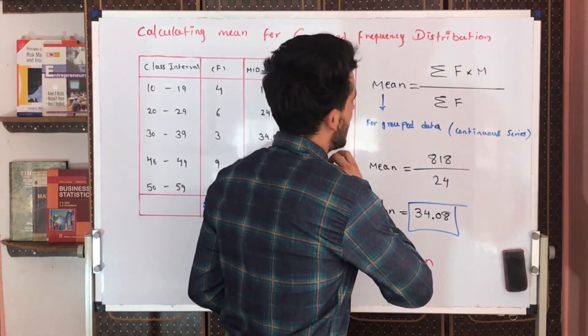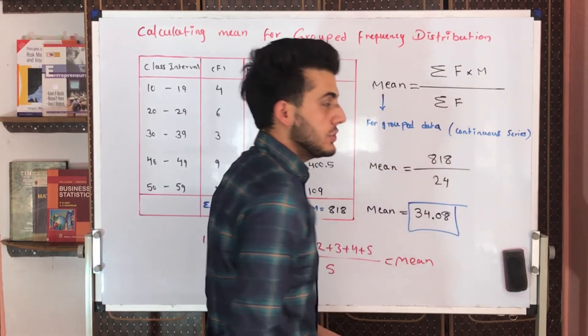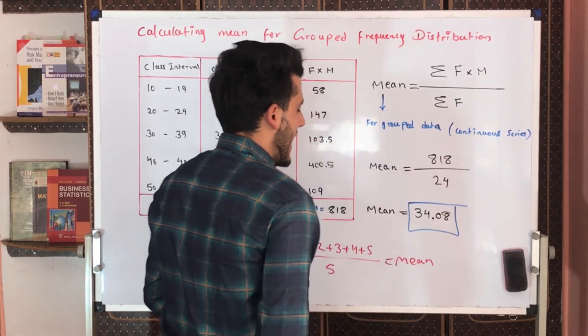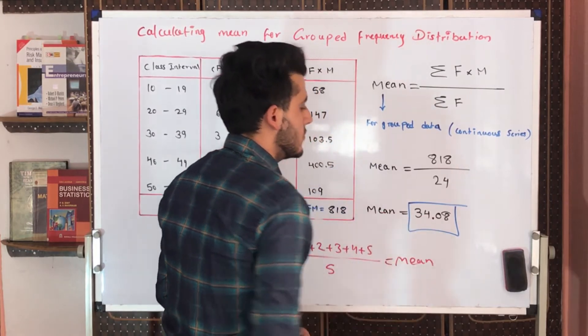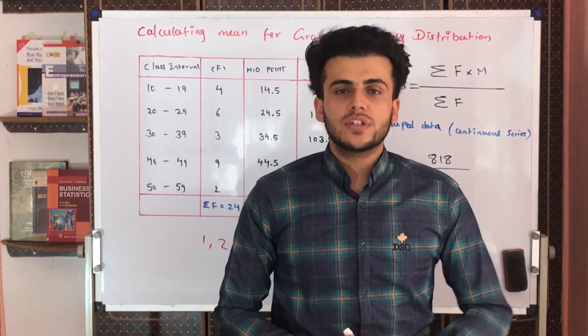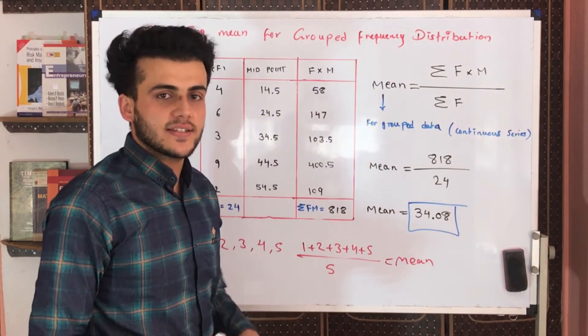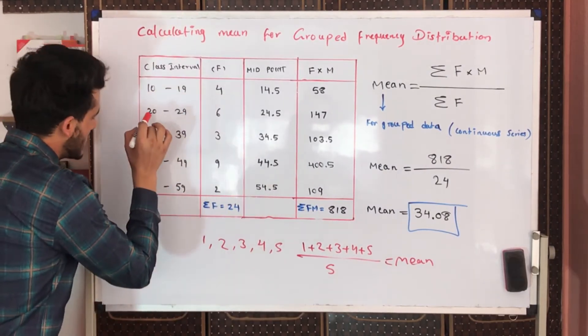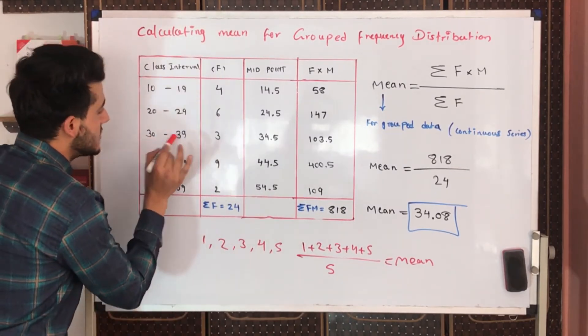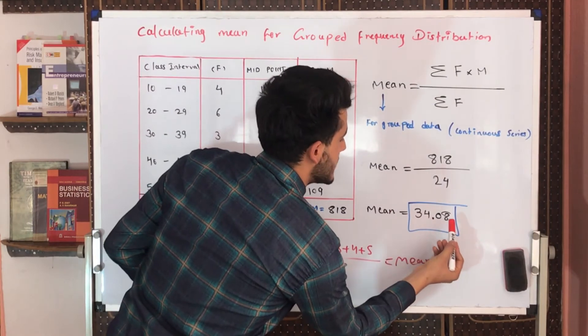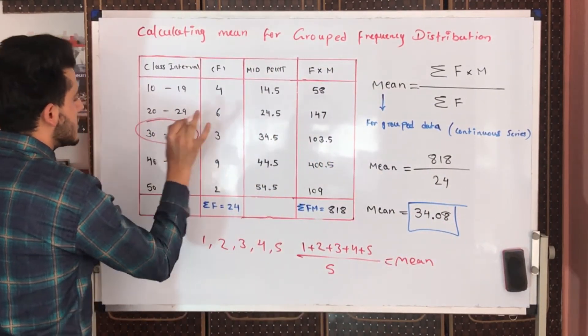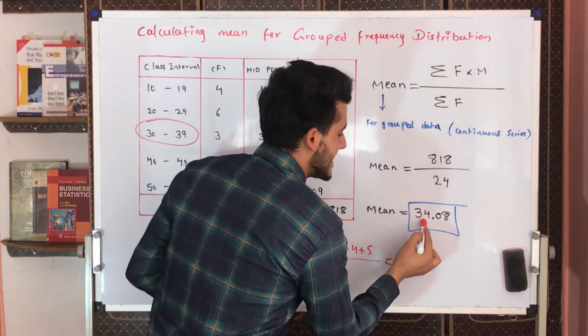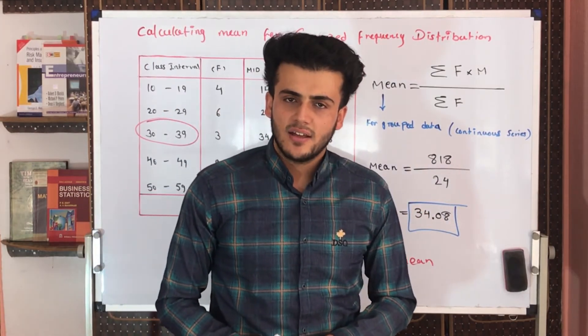We go with the formula for grouped data for continuous series: mean is equal to 818 divided by 24, and the result is mean equals 34.08. Now we have found this number, but in which class interval? Is it between 10 to 19? No. Is it between 20 to 29? No. Is it between 30 to 39? Yes, it is 34.08. Our mean class interval is here, and the exact mean is 34.08.